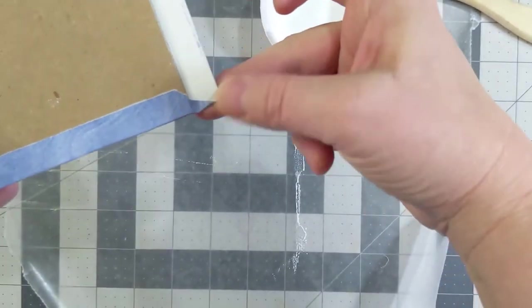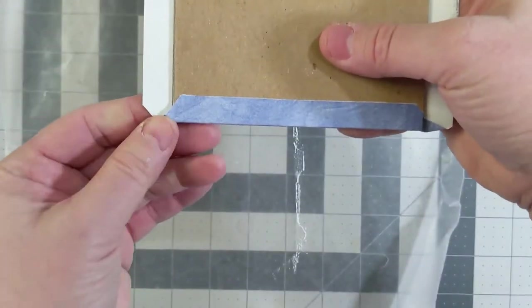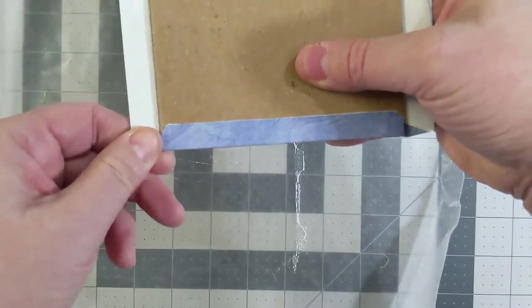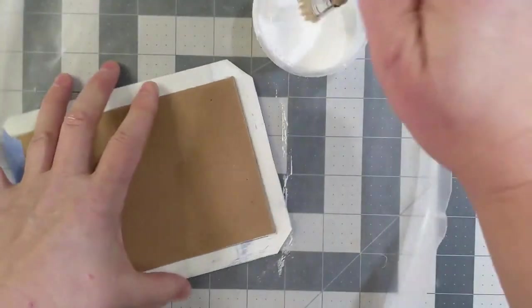Tuck in the extra bit of paper at the corner with your thumbnail or a bone folder. Then add glue to the other sides and press down.